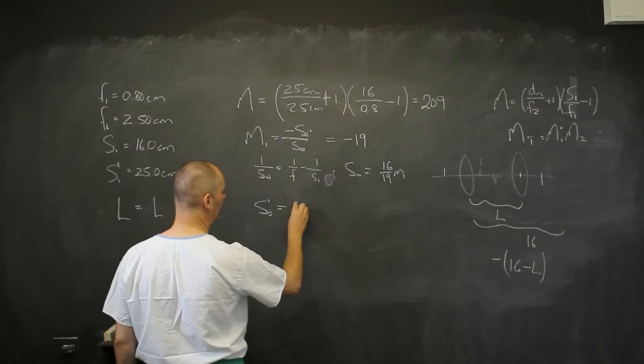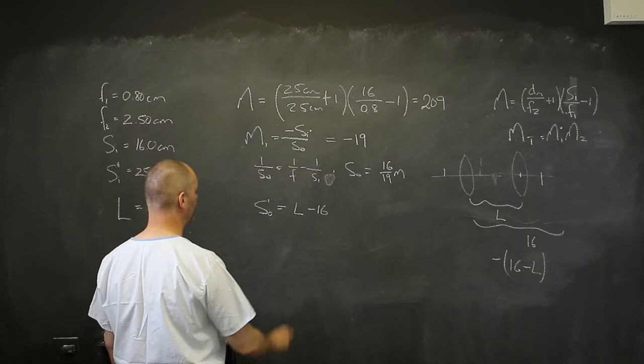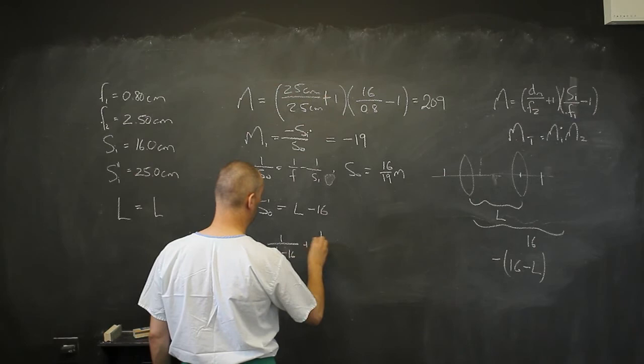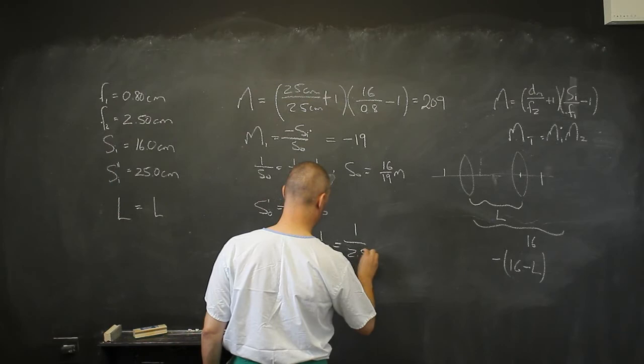My new S0, S0 prime is going to be L minus 16. Okay, so let's just see where this image ends up. So I'm going to have 1 over L minus 16, because 1 over SI has got to be, for my second lens, 1 over 2.5. That gives me an SI.